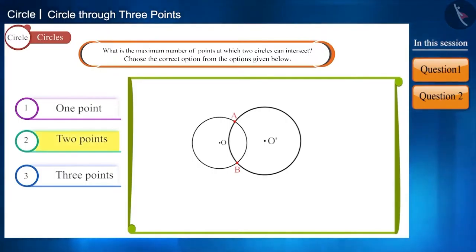Therefore, the second option is correct. The maximum number of points at which two circles can intersect is two. You can confirm this by taking more circles.